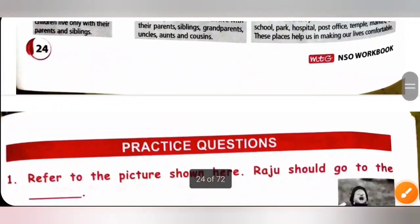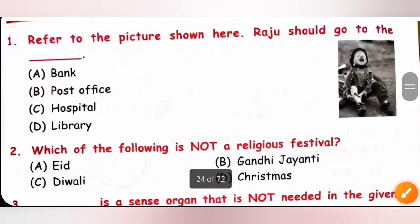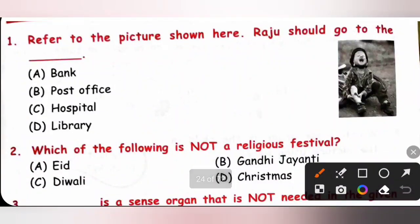Now, let's see the practice questions. First one. Refer to the picture shown here. Raju should go to the dash. A Bank. B Post Office. C Hospital. D Library. So, Raju is hurt. So, he should go to the hospital to get his wound cleaned and dressed properly. So, option C. Hospital is the correct answer.